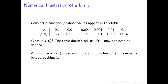If we look at the table, as we get closer to zero in the top row — in other words, as we move closer to the center of the table — and look at what's happening to the values of f of x in the bottom row, they seem to be getting closer and closer to one. So f of x seems to be approaching one as x approaches zero. What we'll say then is that the limit as x approaches zero of f of x is 1.